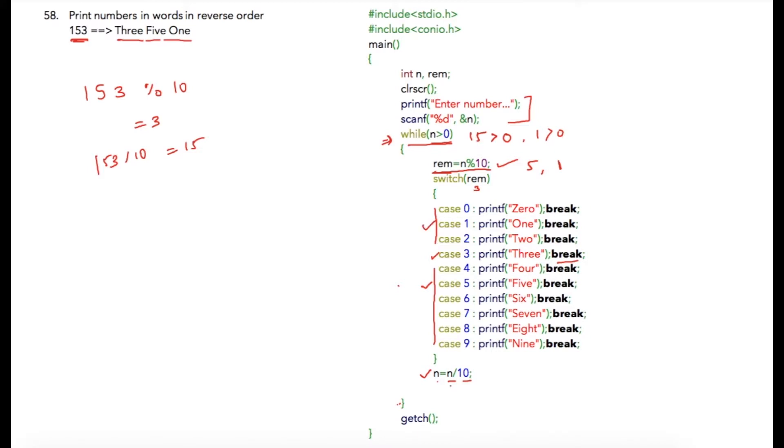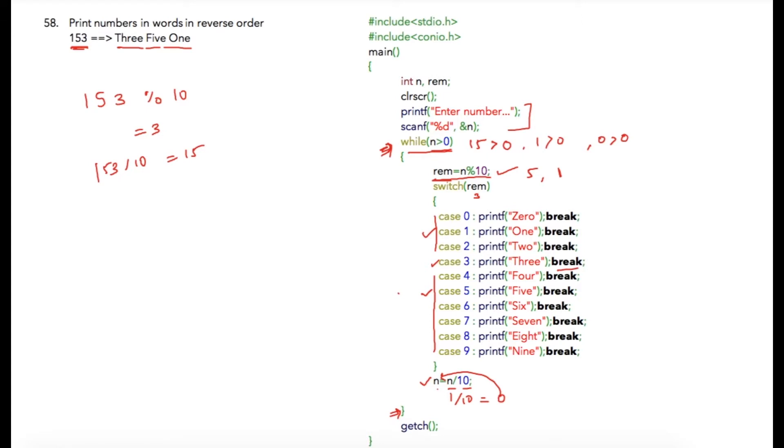And after that, n is equal to n, which is 1, divided by 10. That will be 0. It will be stored into n. When the program controller goes back at the top, condition is 0 greater than 0, which is a false condition. So this while loop is complete now, and that will end your program. So at the end of the program, your output screen will have this as output: 3 5 1.